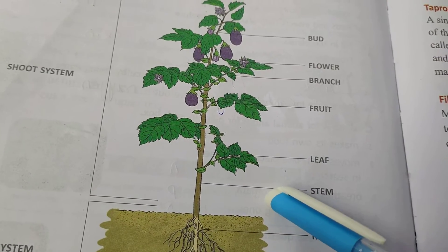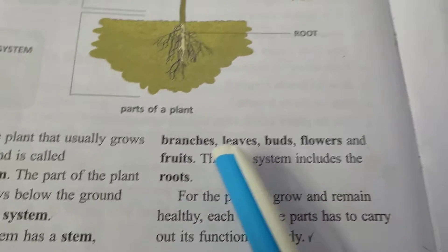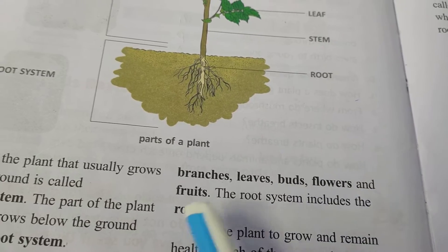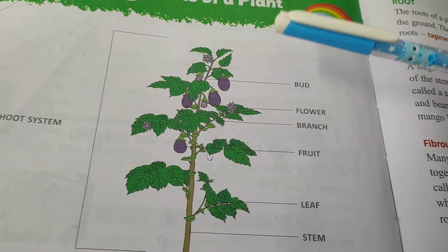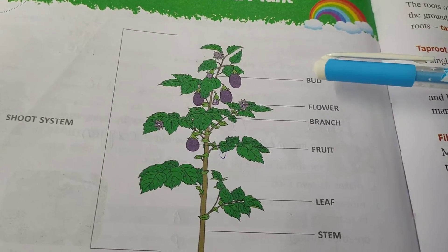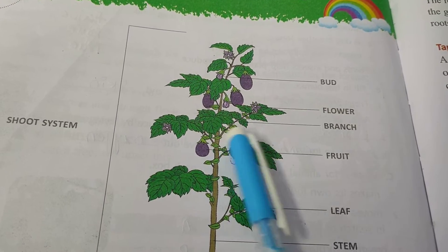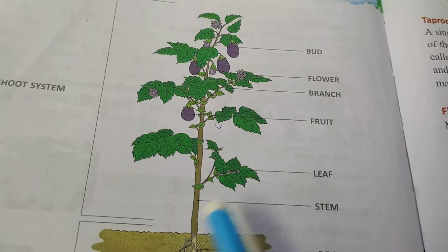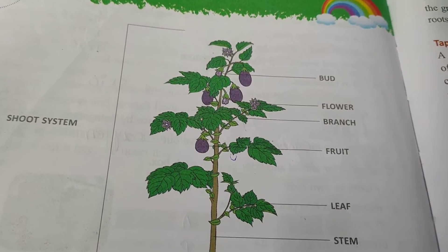What is the root system? Branches, leaves, buds, flowers, and fruit — the shoot system includes these parts. The root system includes the root only. Look at this picture: first is bud, second is flower, third is branch, fourth is fruit, fifth is leaf, sixth is stem. This is your shoot system.